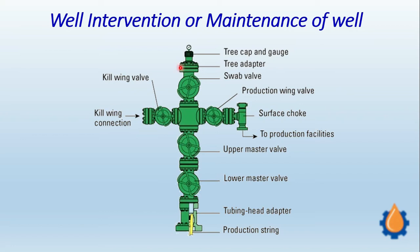During maintenance, this cap is removed and a maintenance device — specifically a wire line operation, where a wire is inserted through this — goes all the way to the bottom hole of the reservoir pipe. These valves are there for control of flow and regulation of pressure.